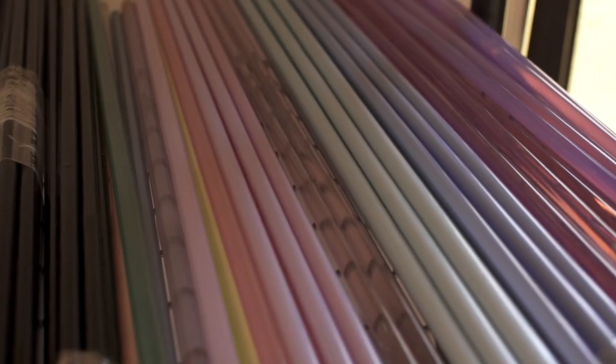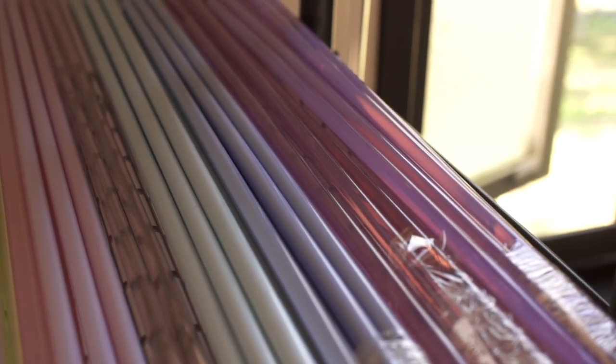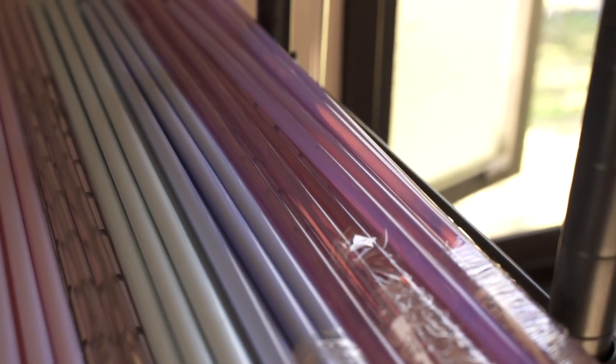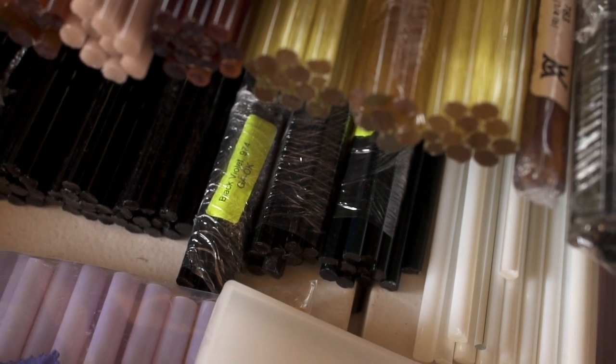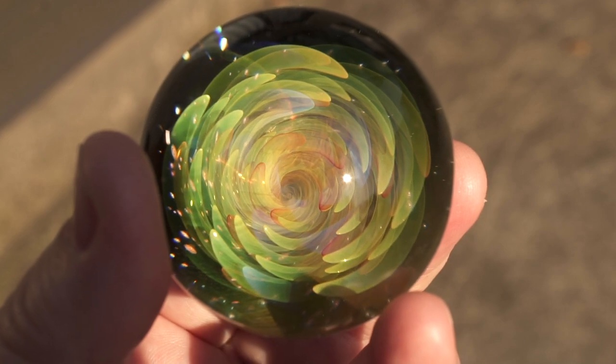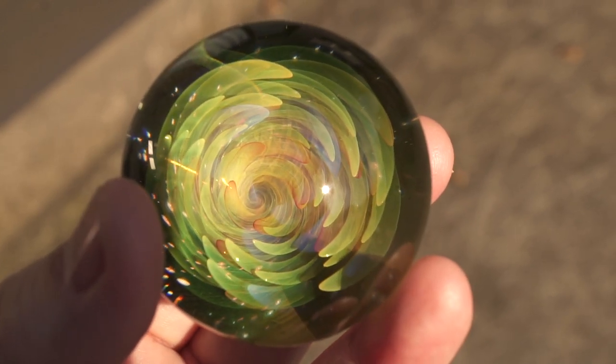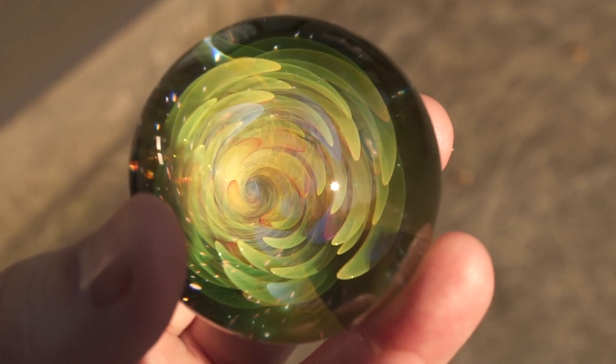But the most interesting thing I saw in the making of the pen is fuming, and that's when they heat up silver or gold or a metal to color the glass. This can't be done with soft glass. Here's some beautiful swirls in this globe, and it can only be done with borosilicate glass and fuming silver and gold.